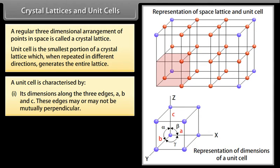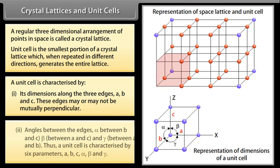Angles between the edges: Alpha between B and C, Beta between A and C, and Gamma between A and B. Thus, a unit cell is characterized by six parameters: A, B, C, Alpha, Beta and Gamma.